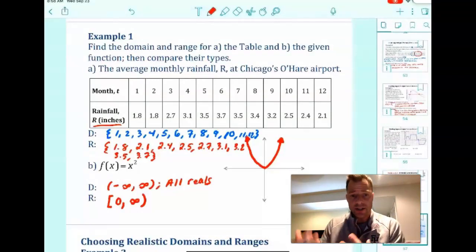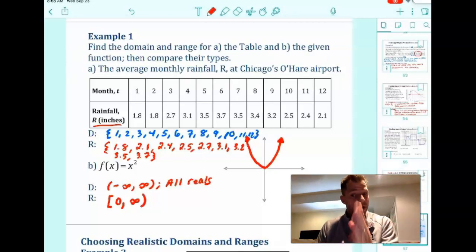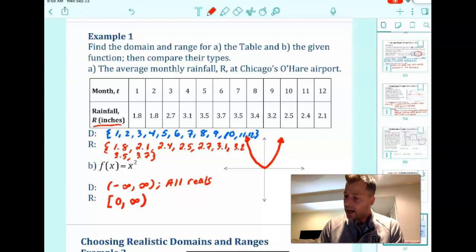So that is how you find the domain and range from a table and from a graph. Two different ways to read it. And just to summarize here, when you list the domain and range from a table, you don't have to repeat the numbers, right? Try to write them in order from smallest to largest, from left to right.